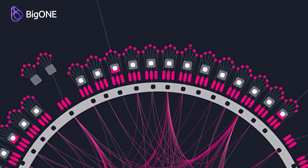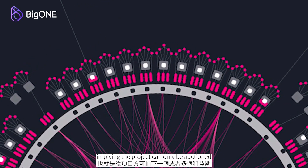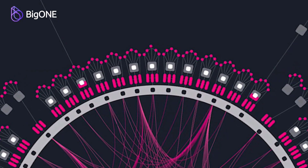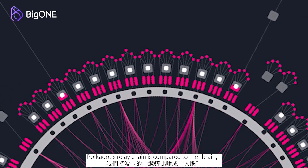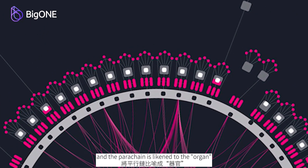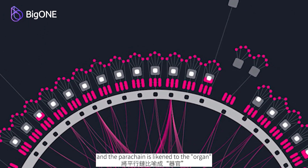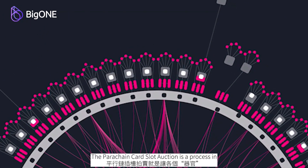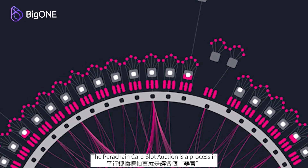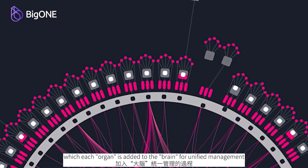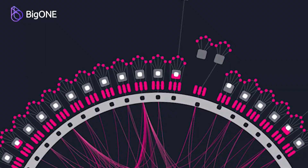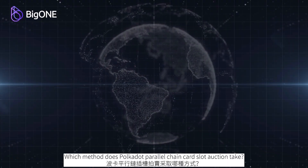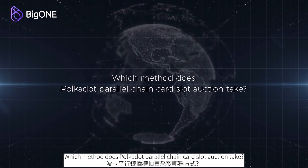At auction, four lease periods can be bid on, meaning a project can only be auctioned for up to two years. Polkadot's relay chain is compared to the brain and the parachain is likened to an organ. The parachain card slot auction is a process in which each organ is added to the brain for unified management.